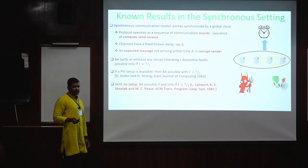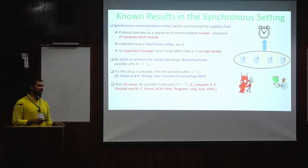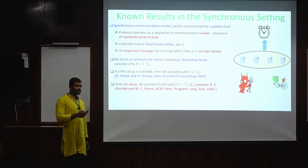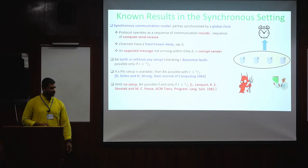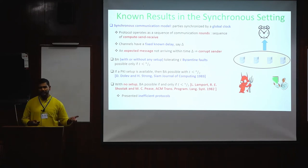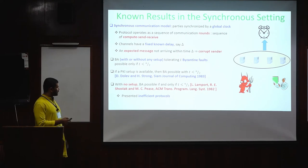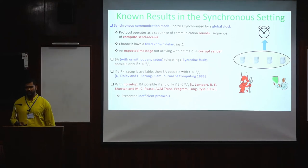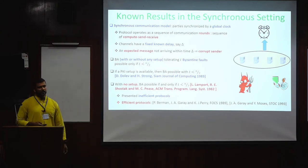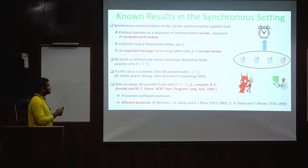If no setup is available — only point-to-point channels — you can design a Byzantine agreement protocol only if there are up to 33% corruptions, i.e., t < n/3. The original work by Lamport et al. gave the EIG (Exponential Information Gathering) Protocol, which is inefficient due to exponential computation. Later, in a sequence of work by Burman et al. and Grier et al., efficient polynomial-time Byzantine agreement protocols were proposed. These are the key results in the synchronous setting.